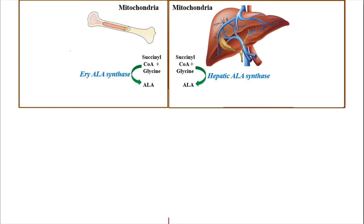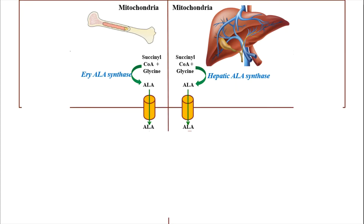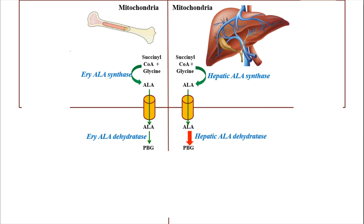We will proceed with ALA, or delta-aminolevulinic acid. ALA, in both organs, with the help of specific transporters present in the mitochondrial membrane, comes to the cytosol. In the cytosol, in the presence of ALA dehydratase, it converts into PBG or porphobilinogen. In the liver the enzyme is called hepatic ALA dehydratase; in erythropoietic tissue it is erythropoietic ALA dehydratase. This enzyme can also be called PBG synthase.